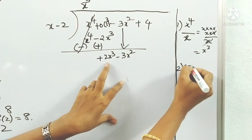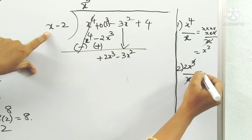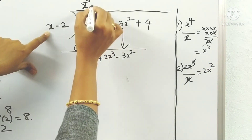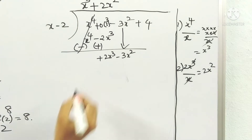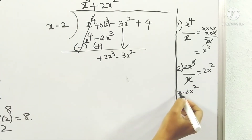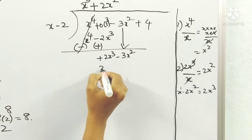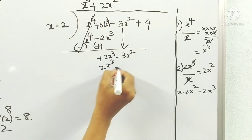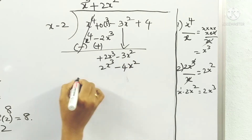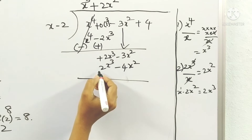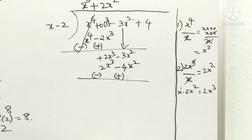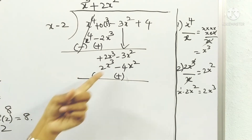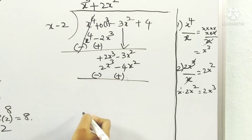For the second term in the quotient, take 2x³ and divide by x, giving 2x². Write plus 2x² in the quotient. Multiply: x into 2x² = 2x³, and minus 2 into 2x² = minus 4x². Change the signs and subtract — the 2x³ terms cancel.